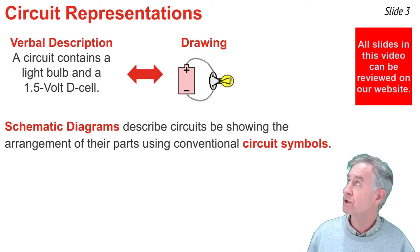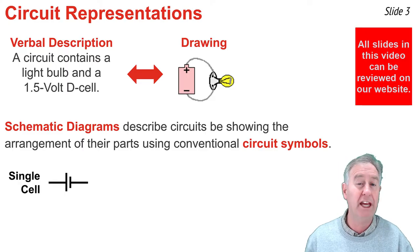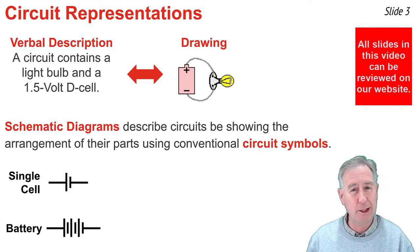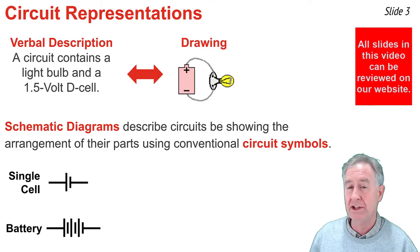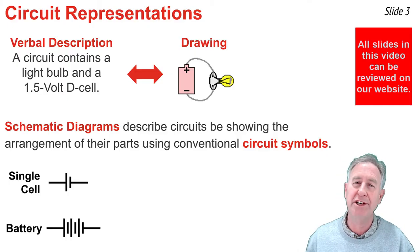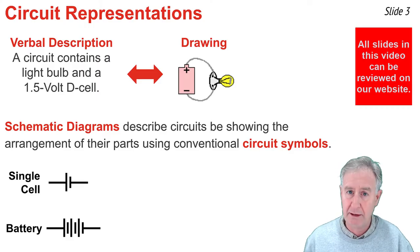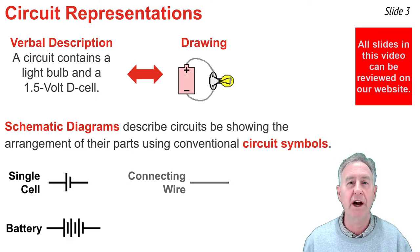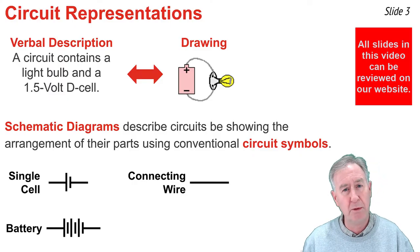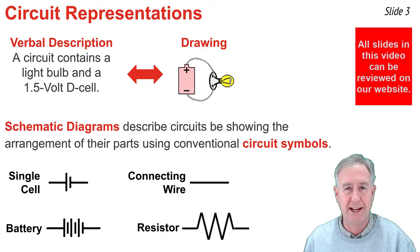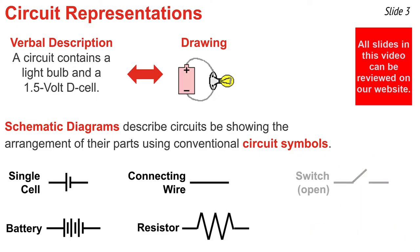For instance, a single cell is represented by a symbol consisting of a long and a short line. A battery is a collection of cells and is represented by a collection of long and short lines. In both symbols, the long line represents the positive terminal and the short line represents the negative terminal. Connecting wires are represented by a line, and a light bulb or motor or heater — commonly referred to as a resistor — is represented by a zigzag symbol. We can also have switches in our circuits, which could be open or closed.